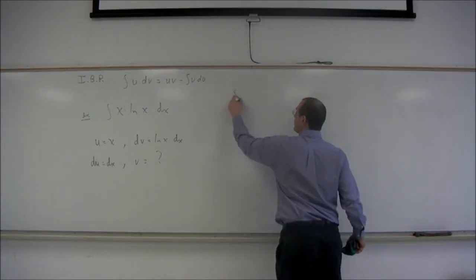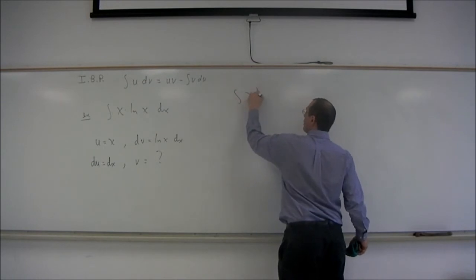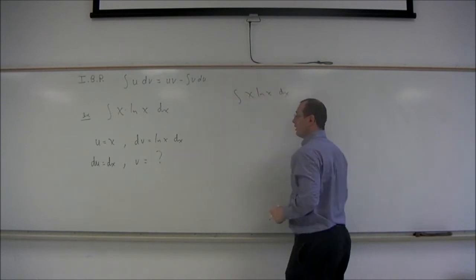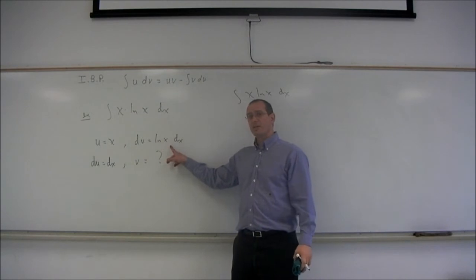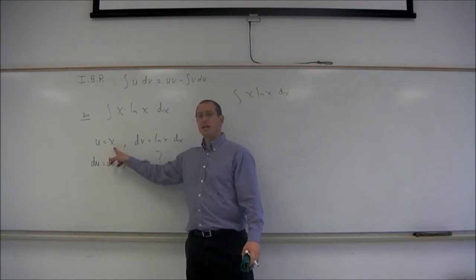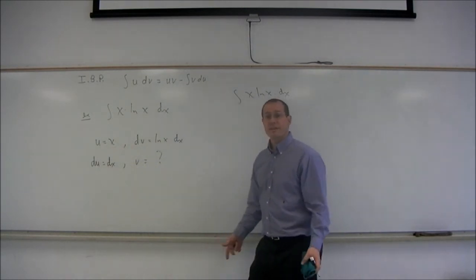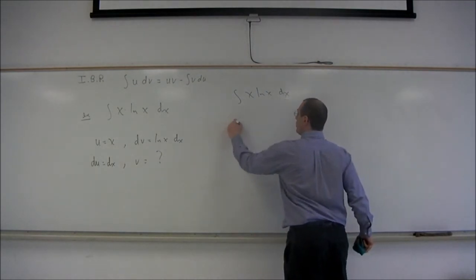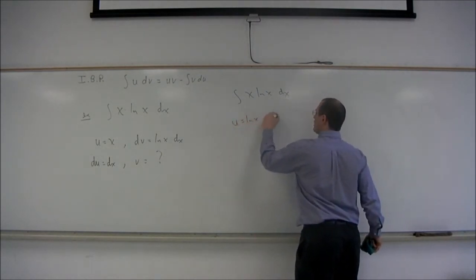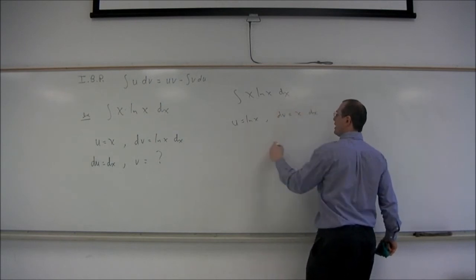So let's try something else for u. Since we didn't know how to take the antiderivative of log x, let's try putting log x over here so that we take the derivative of it. So u equals log x, dv equals x dx.